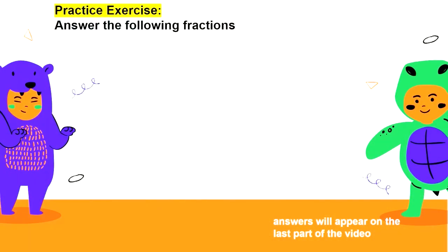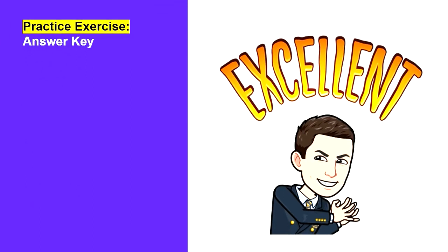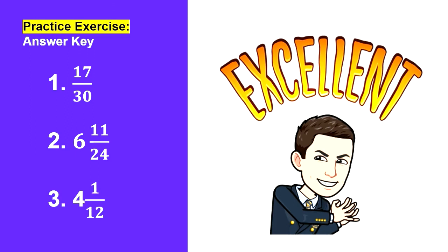To further assess your understanding in adding fractions, here are some practice exercises. Number 1: 2 fifths plus 1 over 6 equals? Number 2: 5 over 6 plus 5 and 5 over 8 equals? Number 3: 2 and 3 fourths plus 1 and 1 third equals? Here are the answers: The answer to problem 1 is 17 over 30. The answer to problem 2 is 6 and 11 over 24. And the answer to problem 3 is 4 and 1 twelfth.